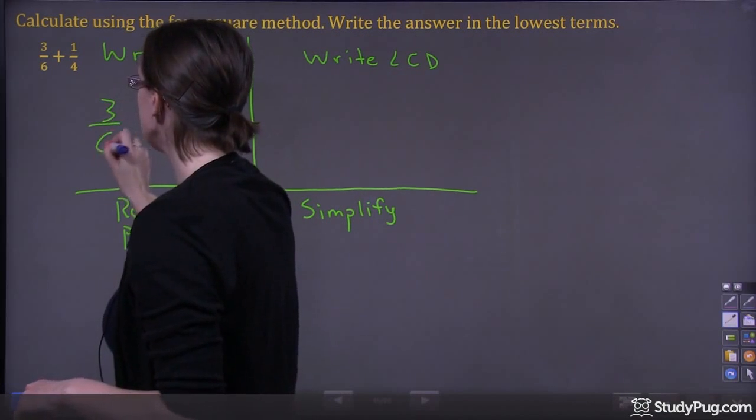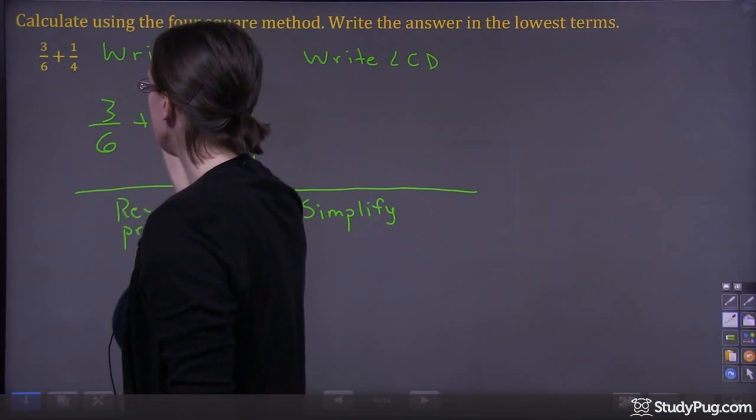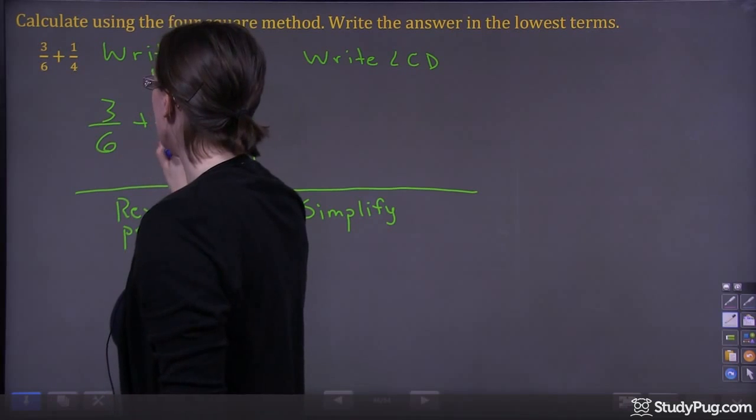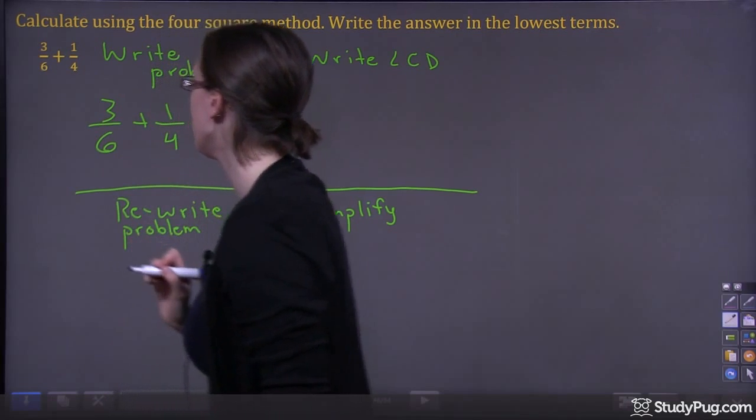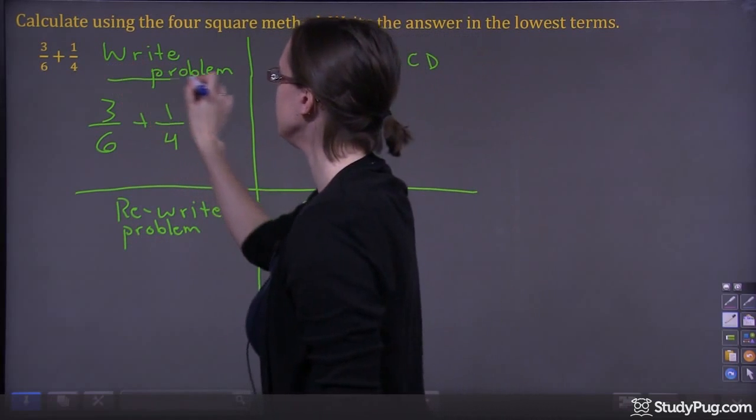So the first thing we want to do is write the problem in this box. Our problem: we have three over six, and we're adding one over four. That's our problem.